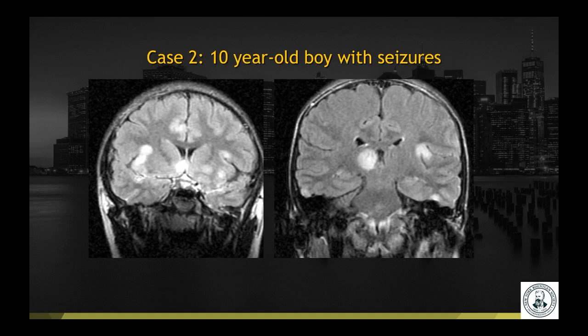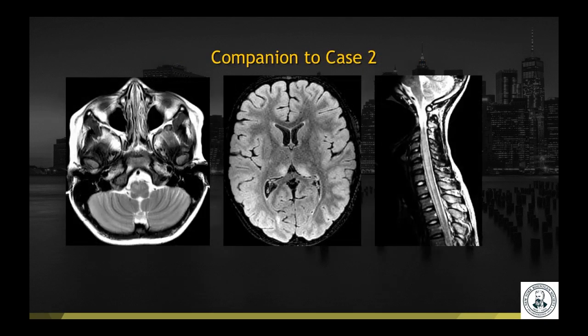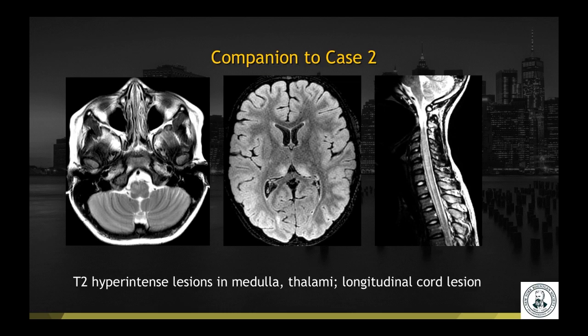Case number two: a 10-year-old boy with seizures. Coronal T2 FLAIR images show T2 hyperintense lesions involving both the white and grey matter as well as the deep grey matter. A companion case with axial T2, axial T2 FLAIR, and sagittal T2 from the cervical spine demonstrates T2 hyperintense lesions in the medulla, bilateral thalami, as well as a longitudinal cord lesion.